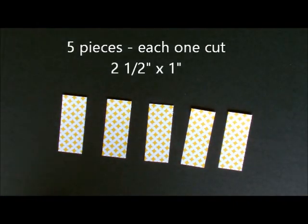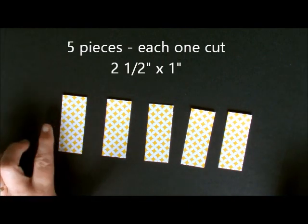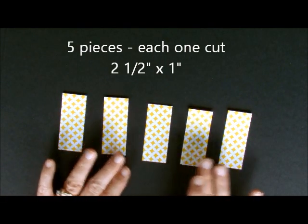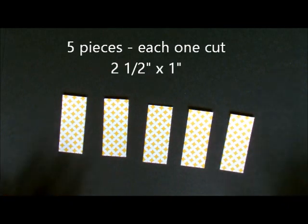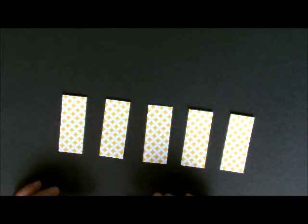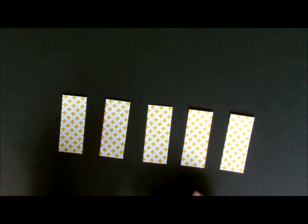I'll show you how to do this. You're going to need five strips that are cut two and a half by one inch. You can do them different sizes and you just need to adjust your chevron, but this is what I'm using. They're two and a half by one inch strips.